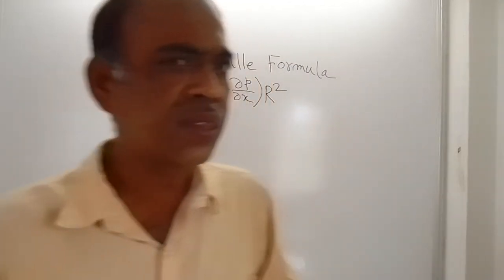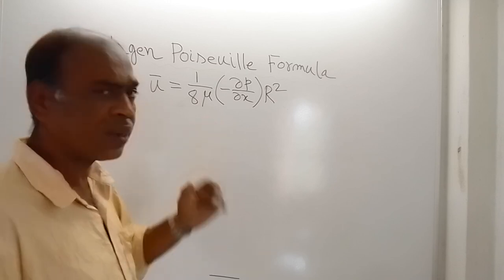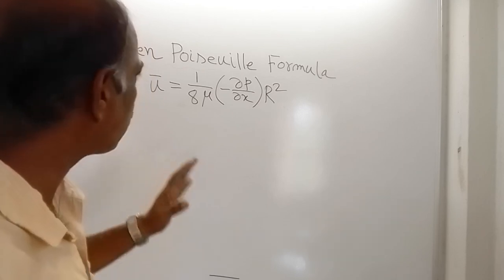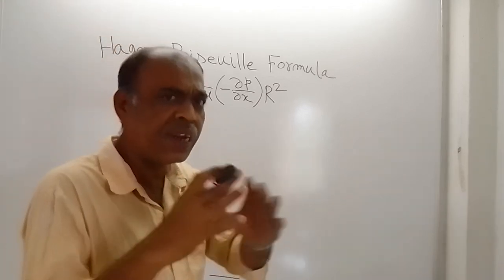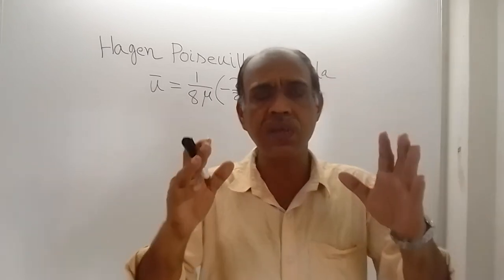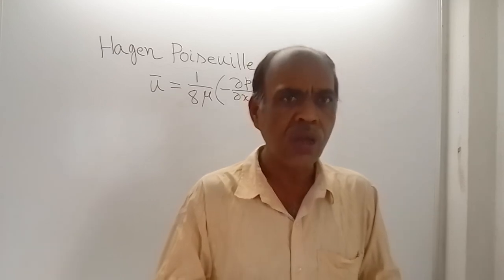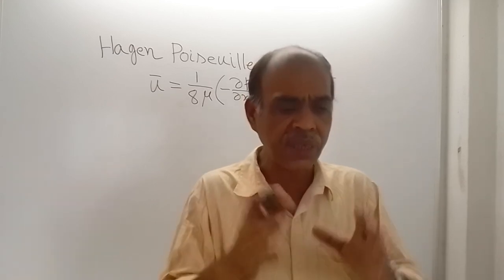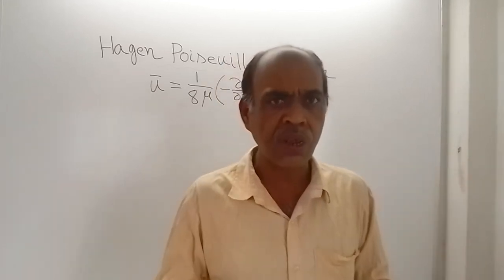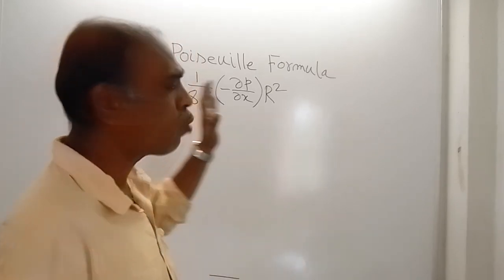Here we are dealing with the same case. For a given length of the pipe, we are going to derive the expression for loss of pressure head. The expression for loss of pressure head for a given length of the pipe is known as the Hagen-Poiseuille formula.